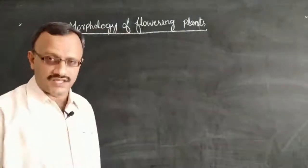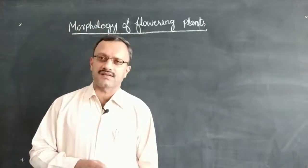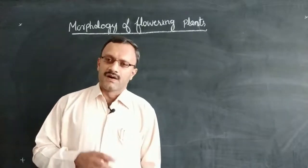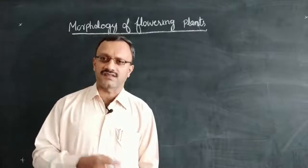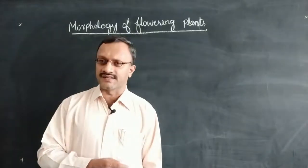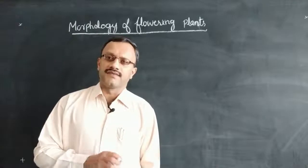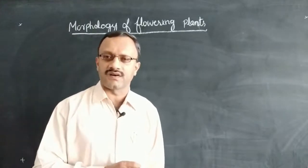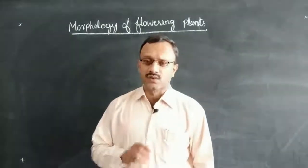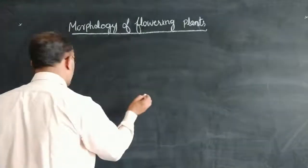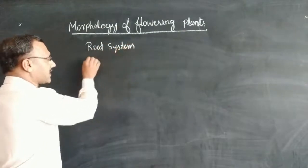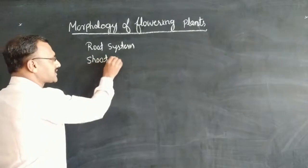Now we are going to learn a topic called morphology. Morphology is nothing but the study of the phenotypic characters or external features of an organism. As we are learning about flowering plants in this chapter, we are learning about the phenotypic or external characters of all angiosperm or flowering plants. As we know, a plant bears two different parts — it shows two different regions: one is the root system and another is called the shoot system.